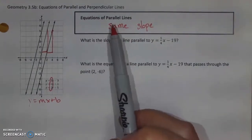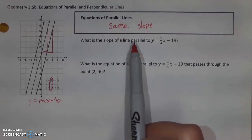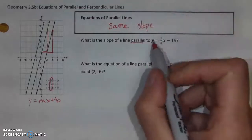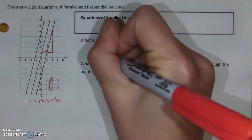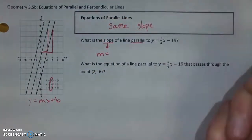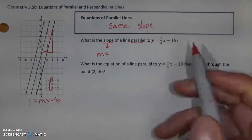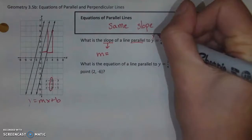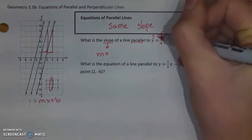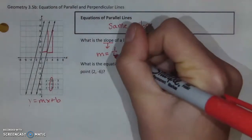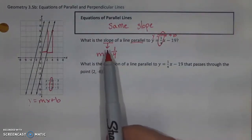That brings me to: how do I use this? It makes questions like this first one really easy. What is the slope of a line parallel to y equals one-fourth x minus 19? I know my answer should look like a slope, so I want m equals something. If it's parallel to this line, it has the same slope. Since this line is in slope-intercept form, its slope is one-fourth. The line parallel to it will also have a slope of one-fourth.